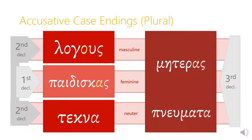Here is what those complete endings look like on some common accusative plural nouns. The accusative plural of logos becomes logous, the accusative plural of paidiske becomes paidiskas, the accusative plural of teknon becomes tekna, the accusative plural of meter becomes meteras — that's the real stem meter plus the -as ending — and the accusative plural form of pneuma is pneumata, the real stem pneumat plus the alpha neuter ending.